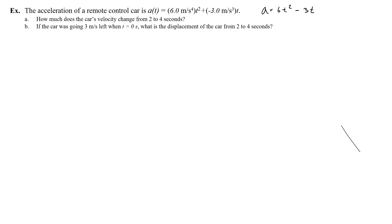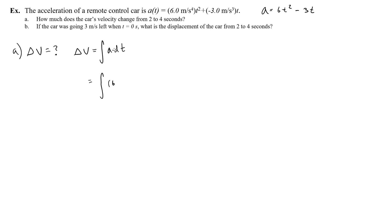Part A asks: how much does the car's velocity change from 2 to 4 seconds? This is asking me to find delta v. Delta v equals the integral of the acceleration equation with respect to time. The acceleration equation is 6t-squared minus 3t, and I'm integrating from 2 to 4 seconds, so I put 2 on the bottom and 4 on the top.